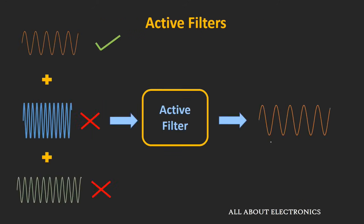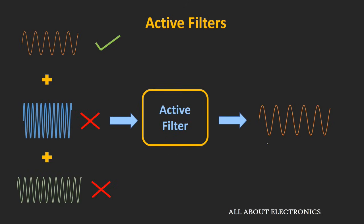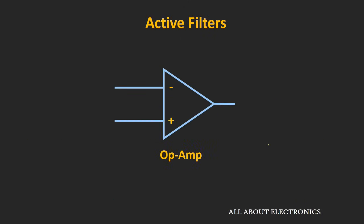These problems can be overcome by using the active filter. This active filter not only selectively passes a certain band of frequencies, but it also provides gain to the input signal. And as its name suggests, these active filters are designed using active components like op-amp and transistors. In this video, we will see the active low pass and the high pass filters which are designed using the op-amp.